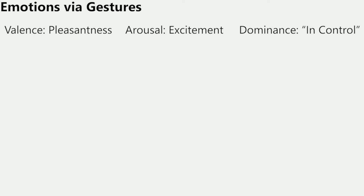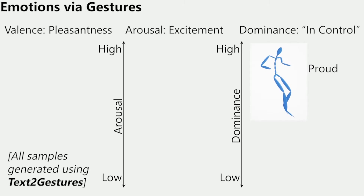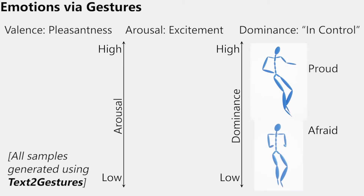Studies in affective computing show that gestures are good indicators of arousal and dominance. Emotions with high dominance, such as pride, tend to be expressed with an expanded upper body, spread arms, and upright head positions. On the other hand, emotions with low dominance, such as fear, tend to be expressed with a contracted upper body, arms close to the body, and collapsed head positions.